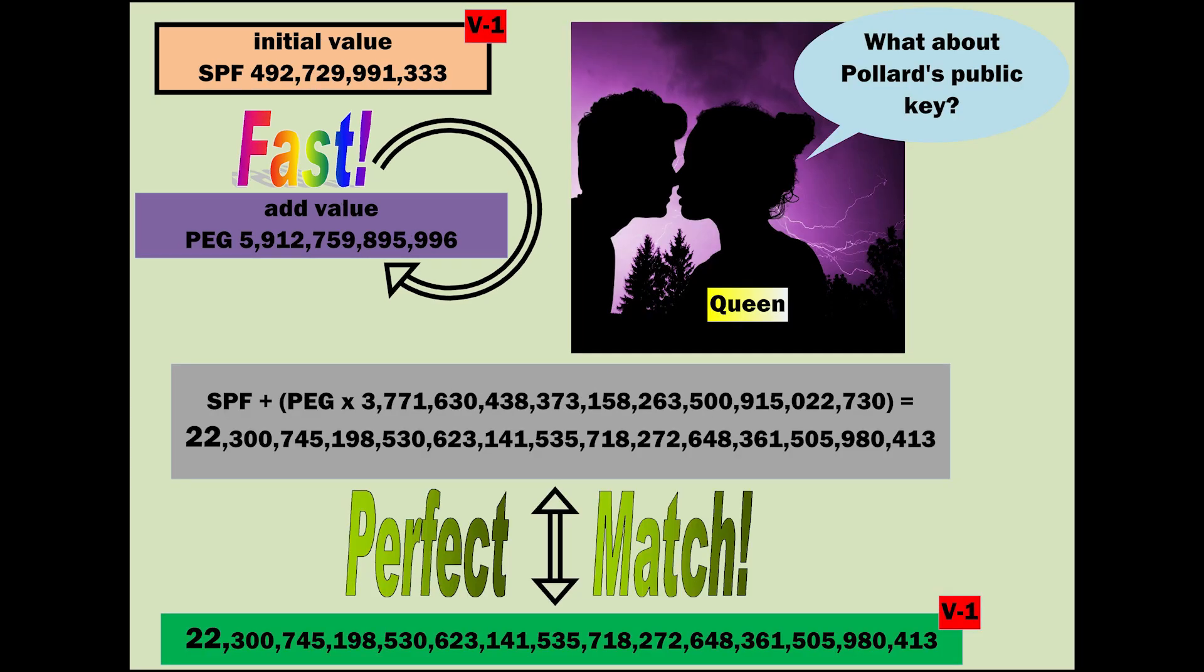What about Pollard's public key? We're jumping to dinner I take it. Pollard's initial value was 492729991333. I used it to create the proper prime expansion gap, which was my add value. In a flash, I reached the public key. It was a perfect match, as you can plainly see.